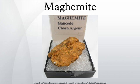Maghemite is formed by the topotactic oxidation of magnetite. Cation distribution: there is experimental and theoretical evidence that Fe³⁺ cations and vacancies tend to be ordered in the octahedral sites in a way that maximizes the homogeneity of the distribution and therefore minimizes the electrostatic energy of the crystal.